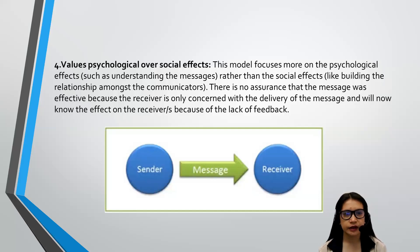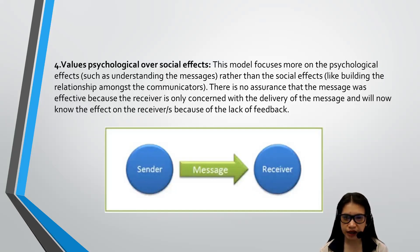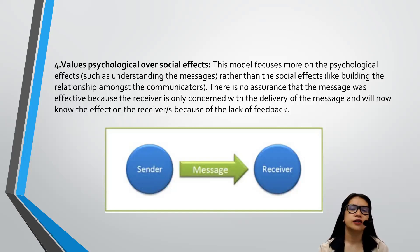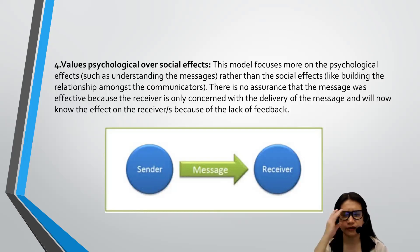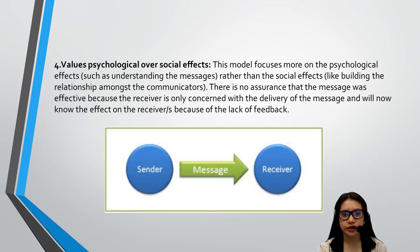There is no way for the sender to know how the receiver understands, reacts, or feels about the message being sent. So the sender will not know the effect. The illustration shows it simply: sender, message, and receiver — linear and straight.